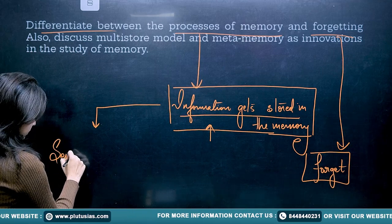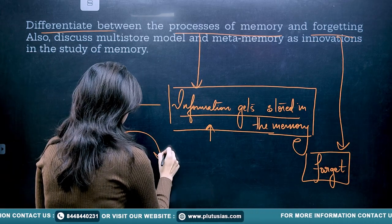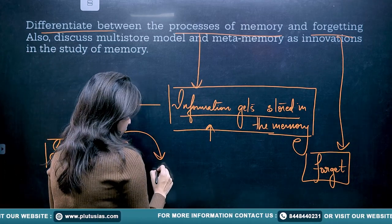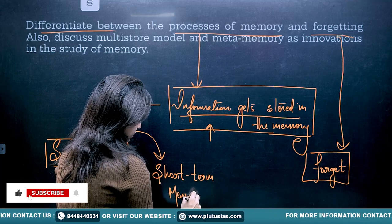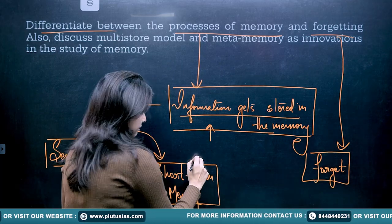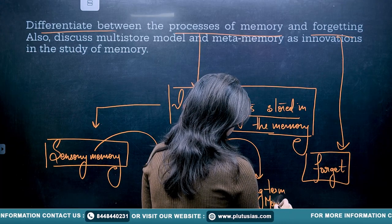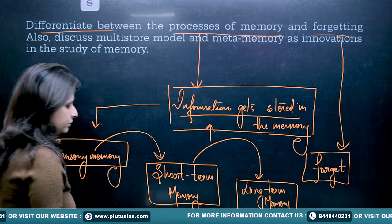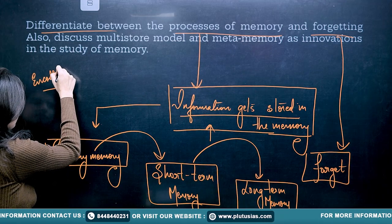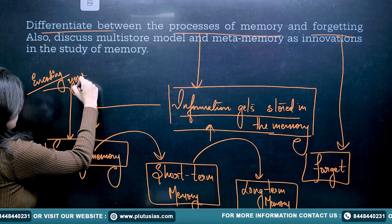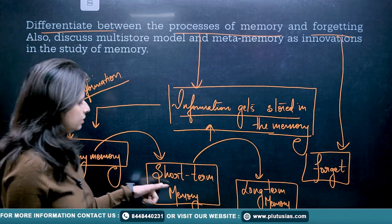Just see how information storage actually happens in memory. The input coming from sensory memory is going to short-term memory, and from short-term memory it is moving to long-term memory. So what is happening is: the sensory memory is actually encoding your information.